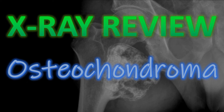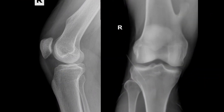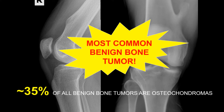Welcome to X-Ray Review. This video is about the most common benign tumor of bone: the osteochondroma. A benign osteochondroma is a bony outgrowth or bony exostosis — like a small bump that originates from the metaphysis and pokes out from the bone. An osteochondroma is the most common benign bone tumor and accounts for approximately 35% of all benign bone tumors.